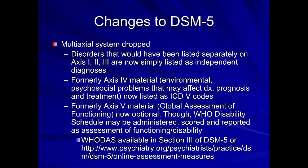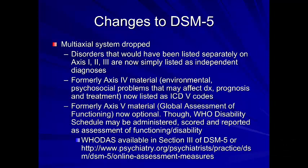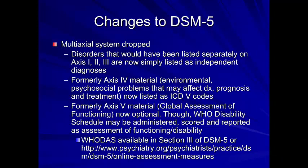The other big change in DSM-5 is that they dropped the multi-axial system. Disorders that would have been listed separately on Axes 1, 2, and 3 are now simply listed as independent diagnoses. Axis 4 material — environmental and psychosocial problems — are now listed as ICD-5 codes. The Global Assessment of Functioning, which was Axis 5, is now optional, though we can administer the World Health Organization Disability Schedule as well.